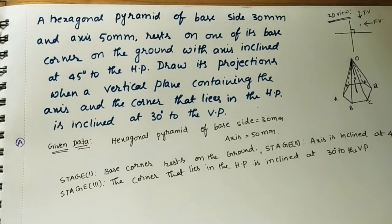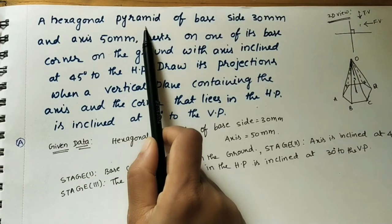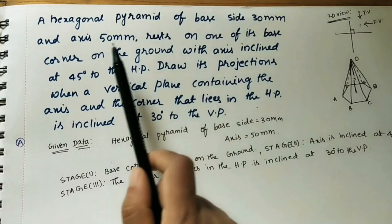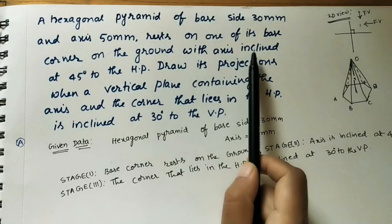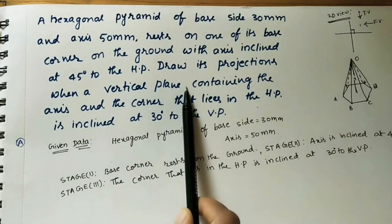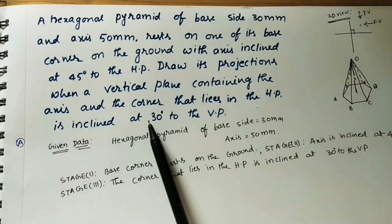Hi friends, welcome to my channel. Let us discuss how to do the projections of a given hexagonal pyramid. The given data is a hexagonal pyramid of base side 30 mm and axis 50 mm. It rests on one of its base corners on the ground with the axis inclined at 45 degrees to the HP. Draw its projections when a vertical plane containing the axis and the corner that lies in the HP is inclined at 30 degrees to the VP. Here HP means horizontal plane and VP means vertical plane.